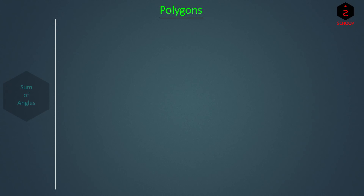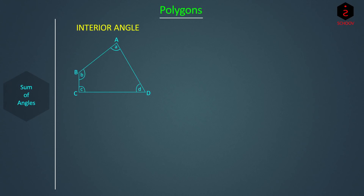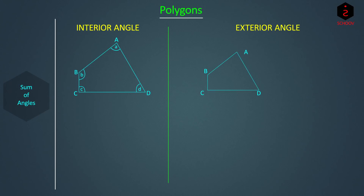Let's draw a four-sided polygon — quadrilateral ABCD — to understand. The angle between sides AB and AD is called angle A; since it is formed in the interior of the figure it is called an interior angle. Similarly B, C, and D are interior angles. Exterior angles are formed in the exterior of the polygon. To form one, extend side AD. The angle between side AB and AD in the interior is the interior angle; the angle formed between the same sides in the exterior is the exterior angle. Let's name it A'. Similarly we can extend other sides and have exterior angles B', C', and D'.